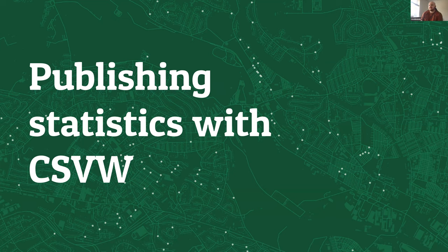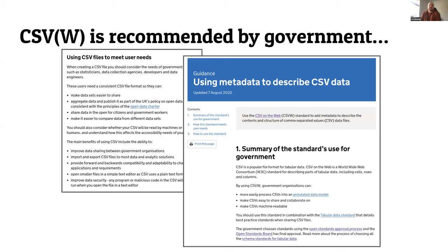As part of being a government organization, there are lots of standards and recommendations. Our own Government Digital Service has put out guidance saying CSV and CSV on the Web are both good standards that will meet good user needs. In particular, the CSV guidance states that data publishers should consider whether CSV files are going to be read by machines or by humans. We have this recommendation from GDS to publish in CSV, but bearing in mind whether it's going to be read by machines or humans — that's quite a key point.